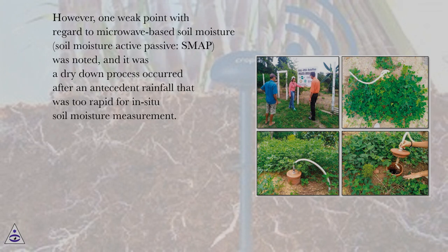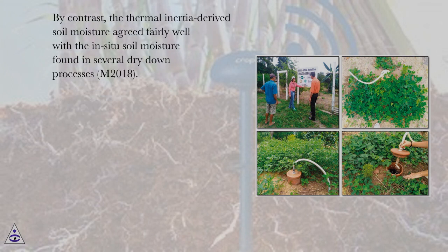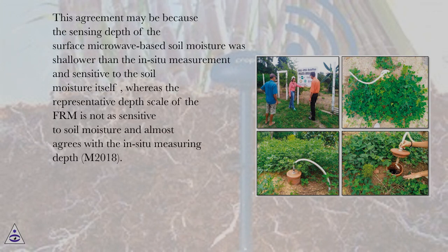However, one weak point with regard to microwave-based soil moisture — soil moisture active passive, SMAP — was noted: a dry-down process occurred after an antecedent rainfall that was too rapid for in-situ soil moisture measurement. By contrast, the thermal inertia-derived soil moisture agreed fairly well with the in-situ soil moisture found in several dry-down processes in 2018. This agreement may be because the sensing depth of the surface microwave-based soil moisture was shallower than the in-situ measurement and sensitive to the soil moisture itself, whereas the representative depth scale of the FRM is not as sensitive to soil moisture and almost agrees with the in-situ measuring depth in 2018.